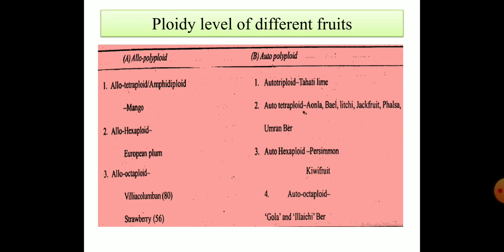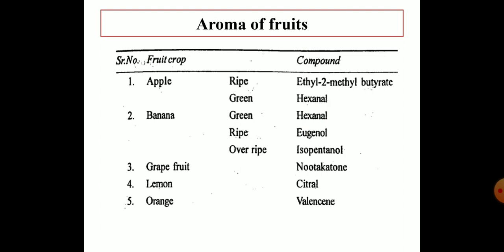A very important topic is the aroma of fruits — which compounds are responsible for the fragrance. For apple: when ripe, the compound is ethyl-2-methylbutyrate; when green, it is hexanal. For banana: when green, hexanal; when ripe, eugenol; when overripe, isopentanol. For grapefruit, the compound is nootkatone; for lemon, it is citral; and for orange, it is valencene.